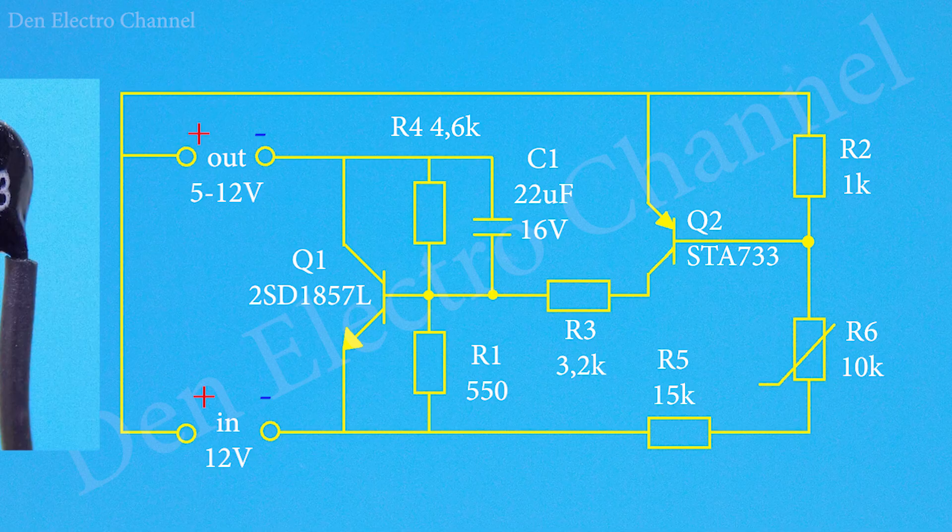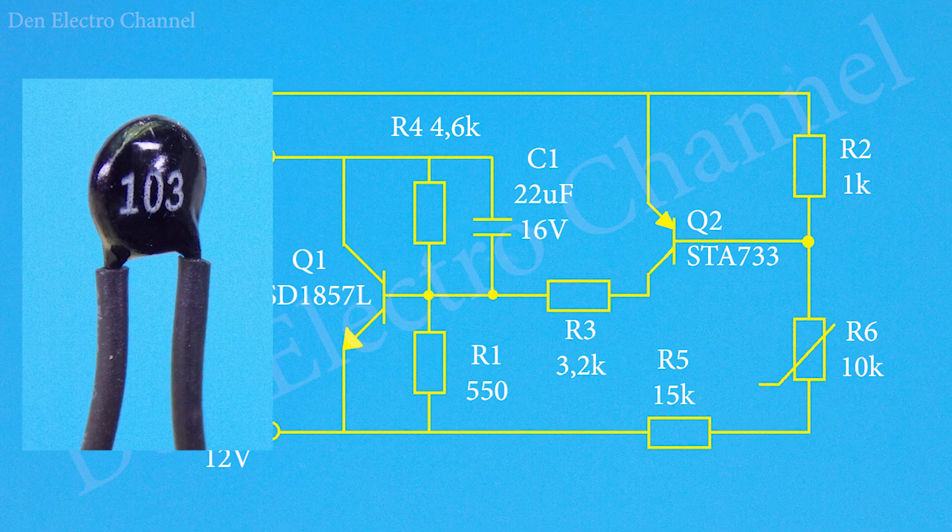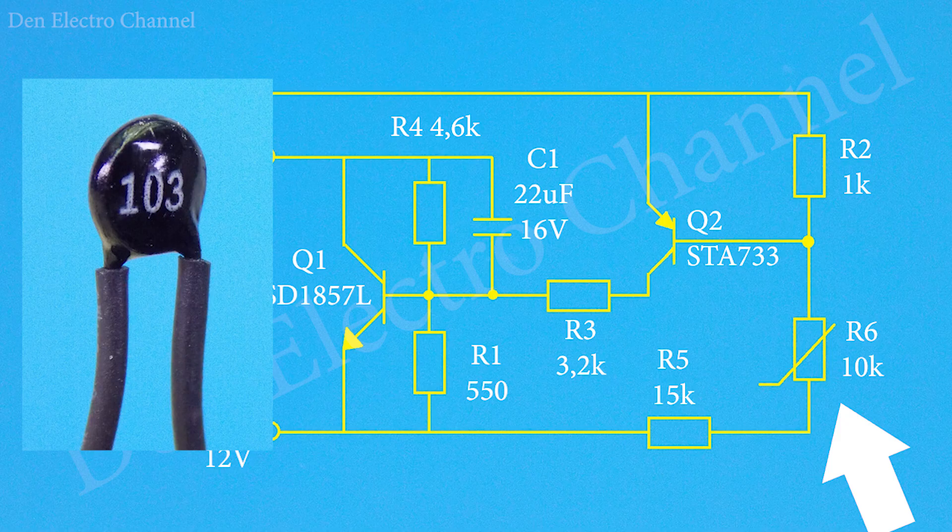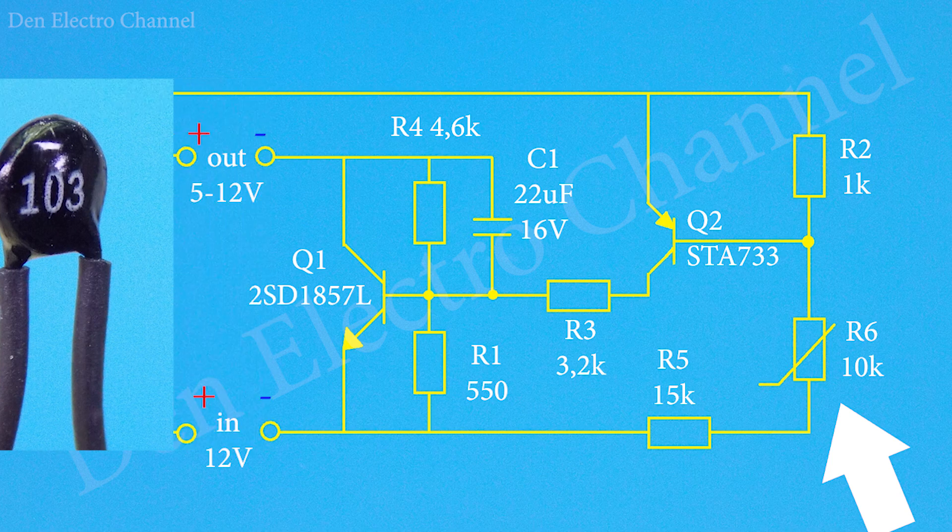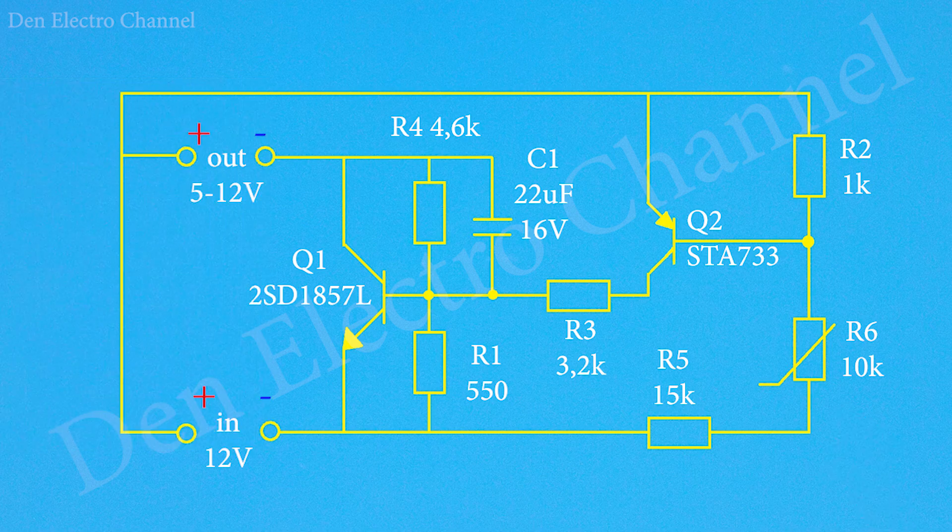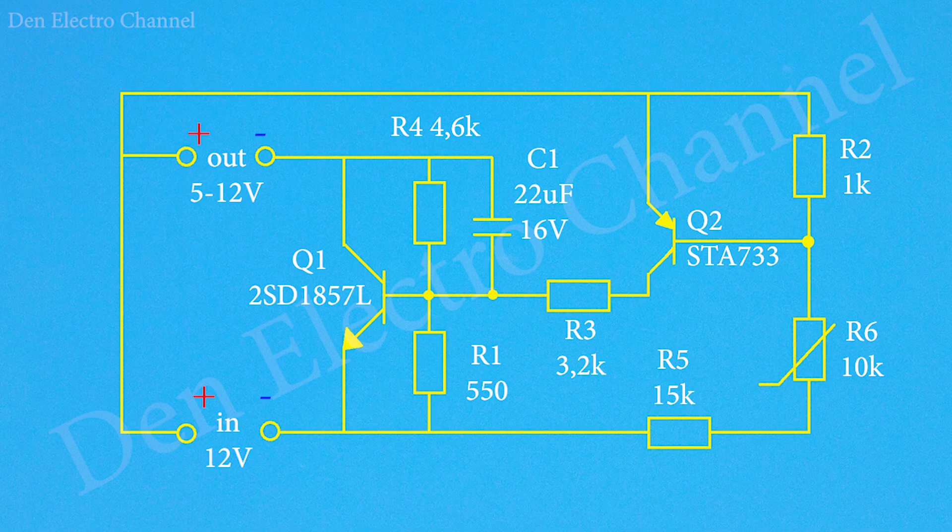The 10 kilo-ohm thermistor R6 is located in the circuit here. This is a thermistor with a negative temperature coefficient. That is, when heated, its resistance decreases. When cold, its resistance is high and therefore transistor Q2 is completely closed.